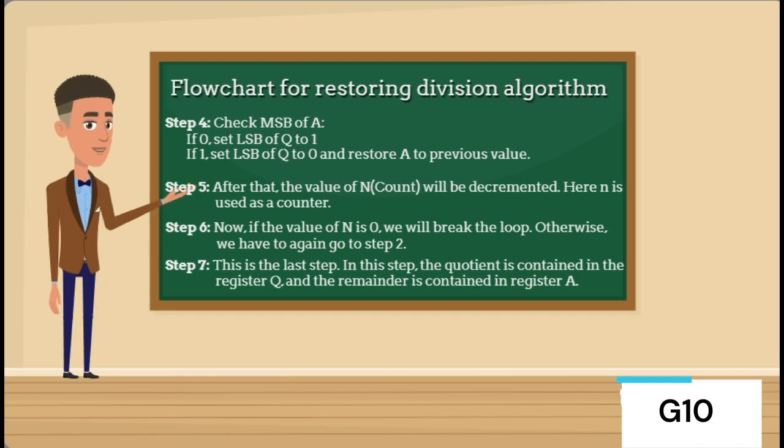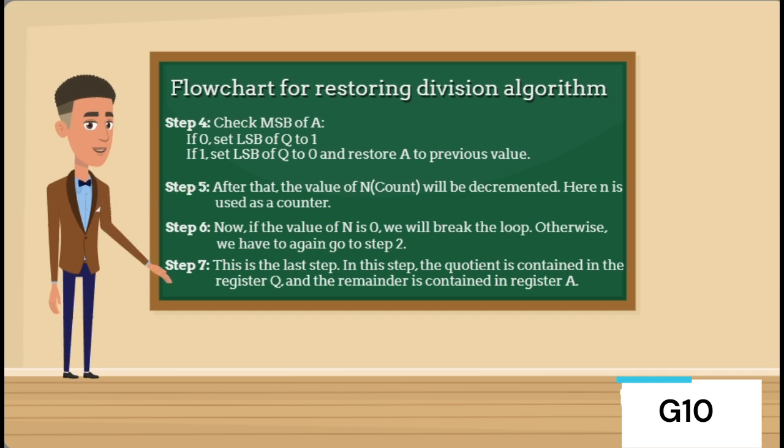Step 7 is the last step. The quotient is contained in register Q and the remainder is contained in register A.